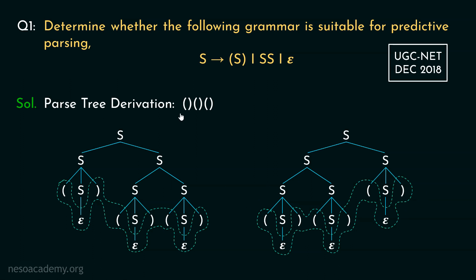Therefore, since for the derivation of the same string we obtain two different parse trees, clearly the grammar is ambiguous, hence not suitable for predictive parsing. Now let's move on to the next question.